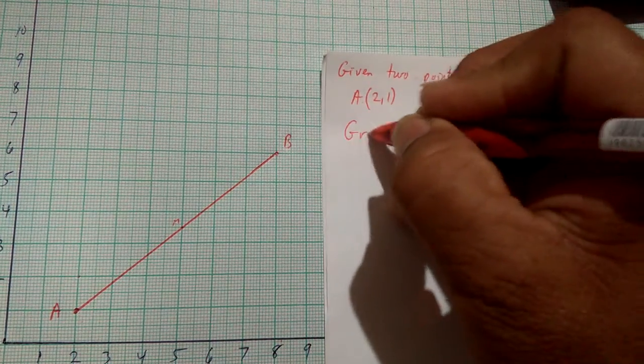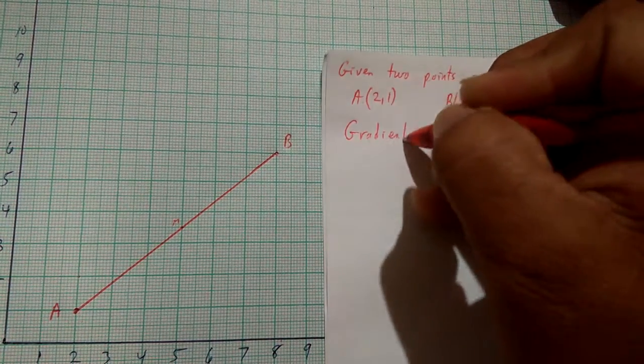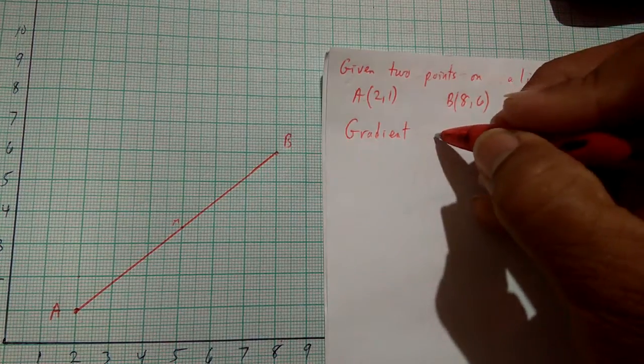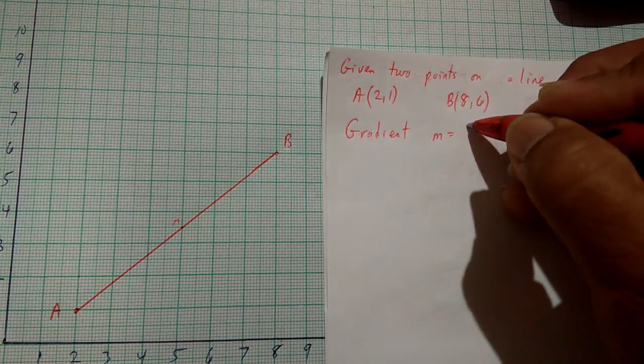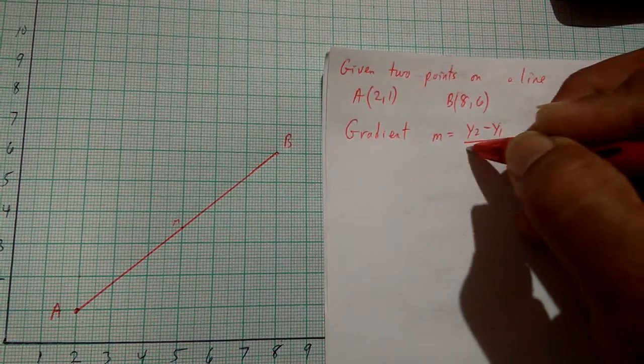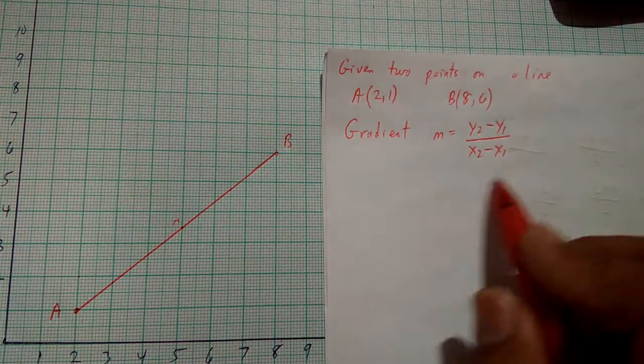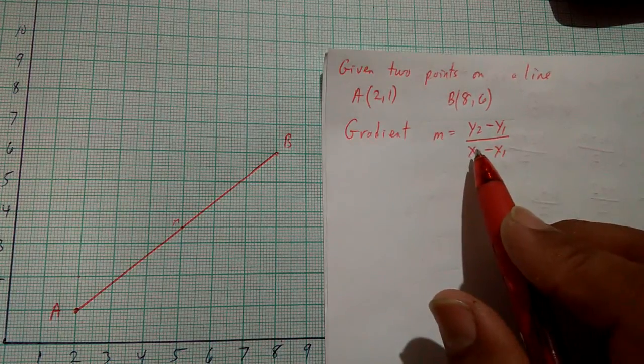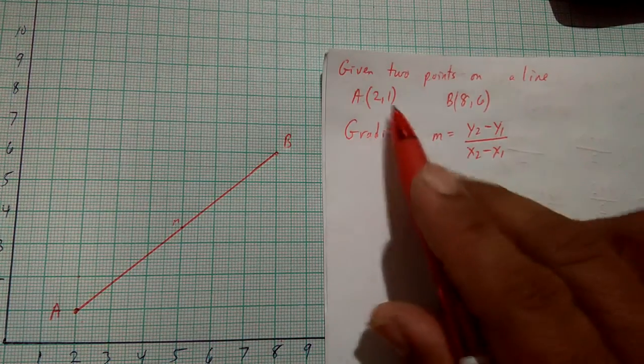To calculate the gradient, which we'll do first, the gradient is given by definition: m equals y2 minus y1 over x2 minus x1. This is the equation for the gradient. So you have to get your two points on the line.